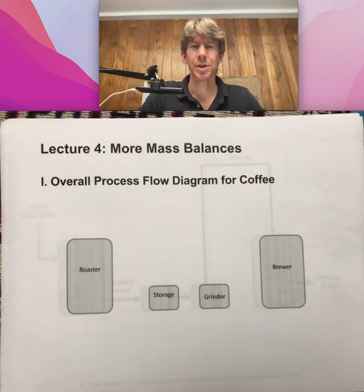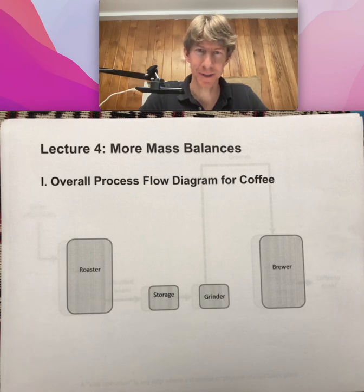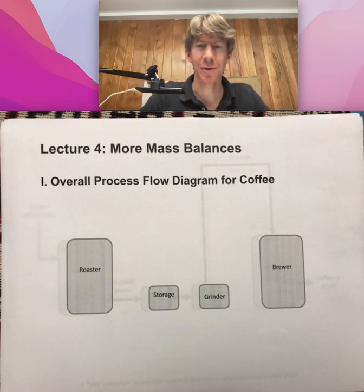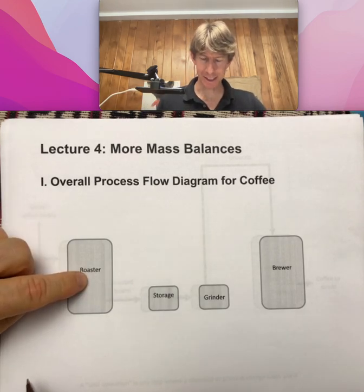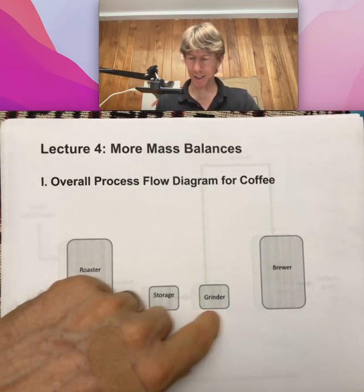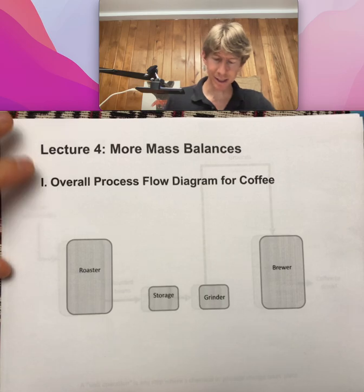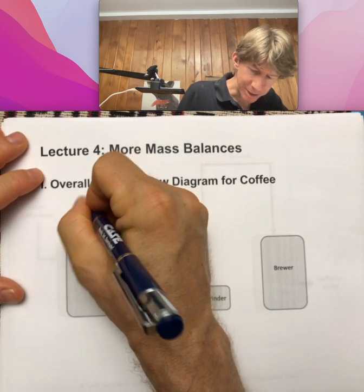This is a lecture on more mass balances, more process flow diagrams, and more unit operations. What we're showing here is the overall process flow diagram for making coffee — from the roasting process into storage, then grinding and brewing using a brewer. Each one of these is what's called a unit operation.